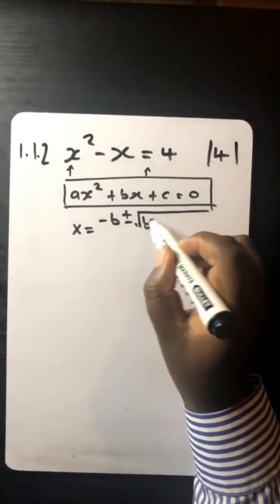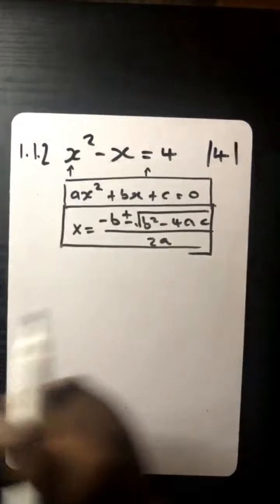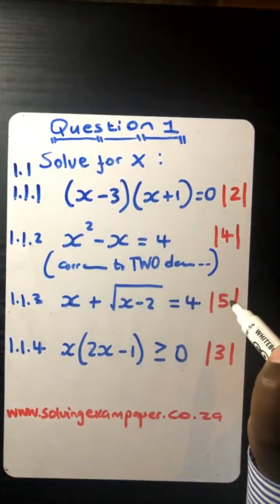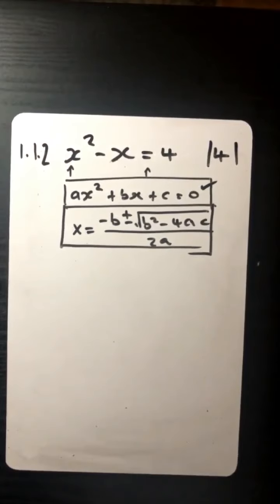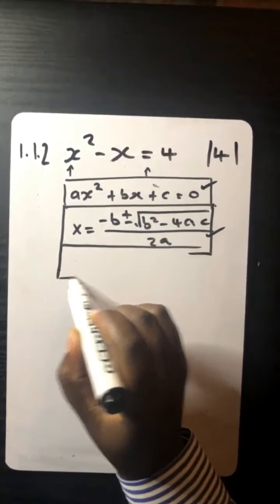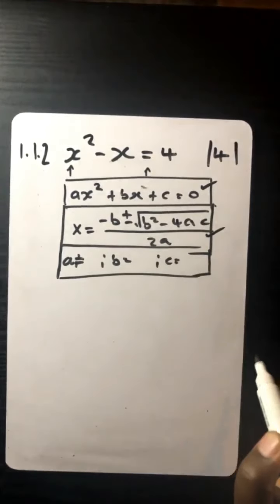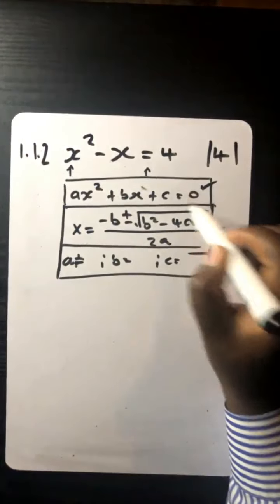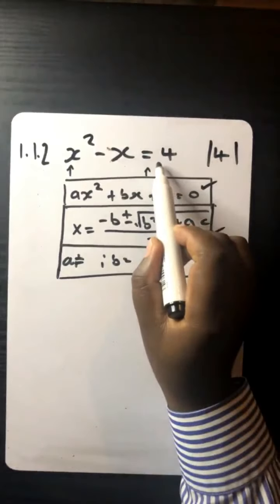Because they said correct to two decimal places, you must use the quadratic formula: negative b plus or minus square root of b squared minus 4ac, all over 2a. This formula must be known by heart. When given a problem like this, first write it in standard form, then identify the a, b, and c values, and substitute into the formula.